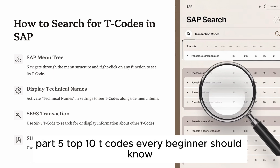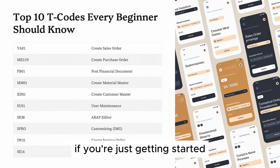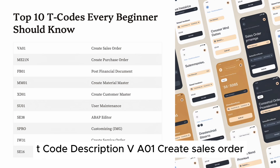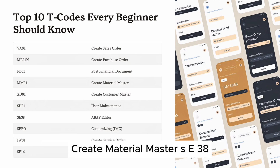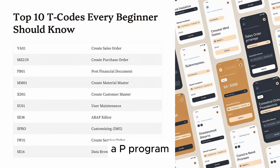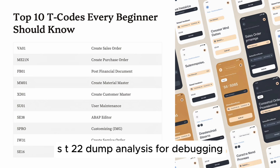Part 5: Top 10 T codes every beginner should know. VA01: Create Sales Order. ME21N: Create Purchase Order. MM01: Create Material Master. SE38: Execute ABAP Program. SE80: Object Navigator. SE11: Data Dictionary. SE93: Display/Create T code. SU01: User Maintenance. MB1C: Inventory Posting. ST22: Dump Analysis for Debugging.